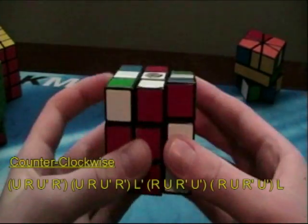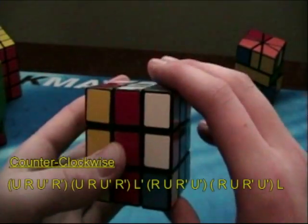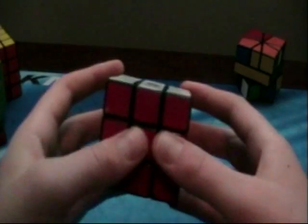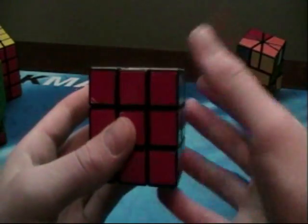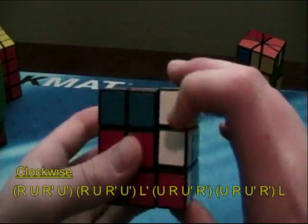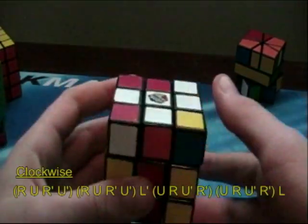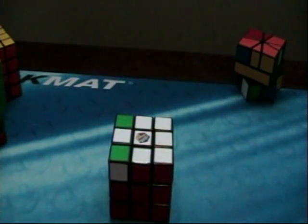So, the algorithm for rotating a corner counterclockwise is like this. U, R, U', R', do that again. L', and then the opposite. R, U, R', U', and then again, and then L. Pretty easy to remember. And then for doing it clockwise, it's almost identical, but instead of doing U, R first, you're going to do R, U, R', U', again, L', and then U, R, U', R', again, and like that. That rotates it counterclockwise. So, you're going to use those two to orient corners.